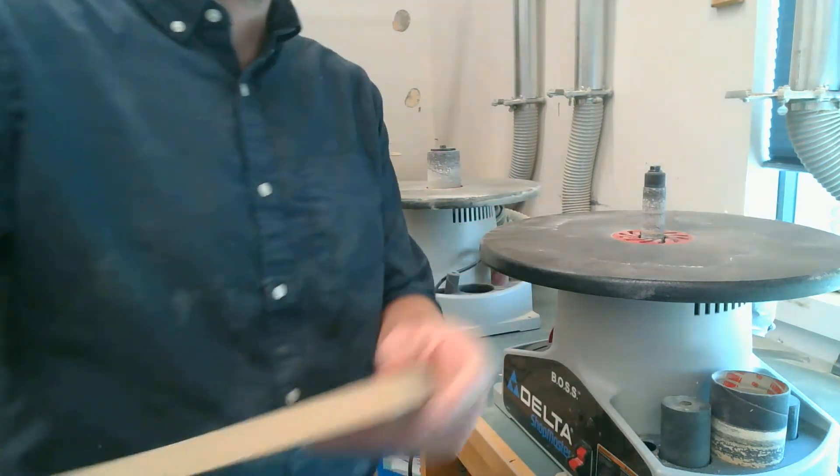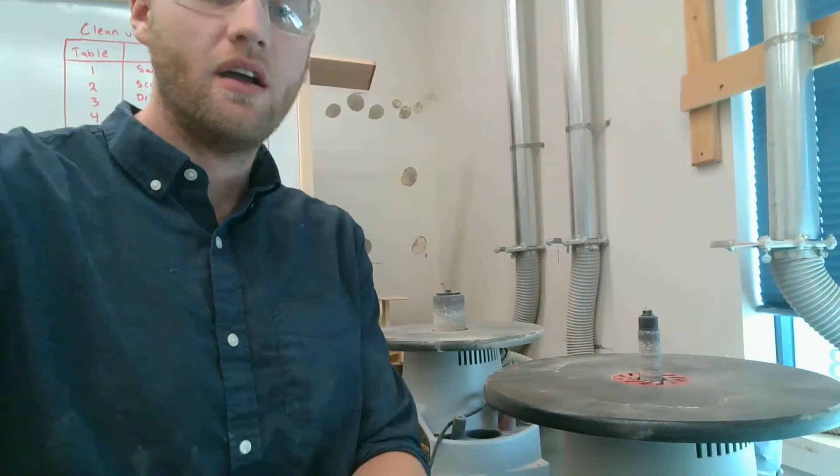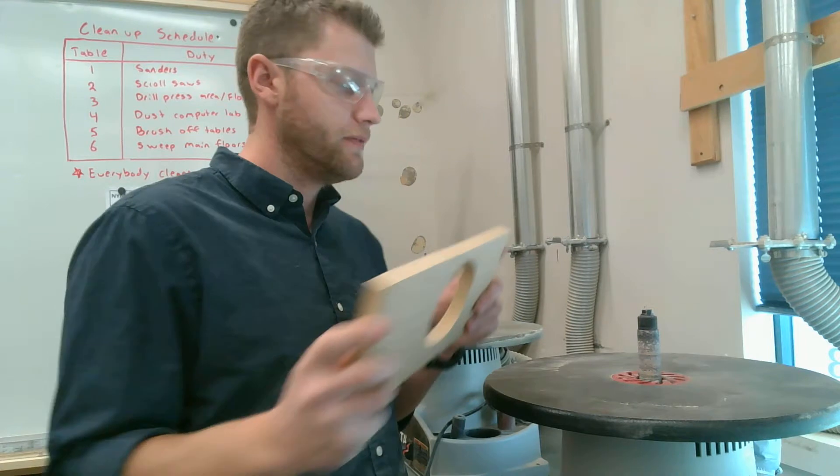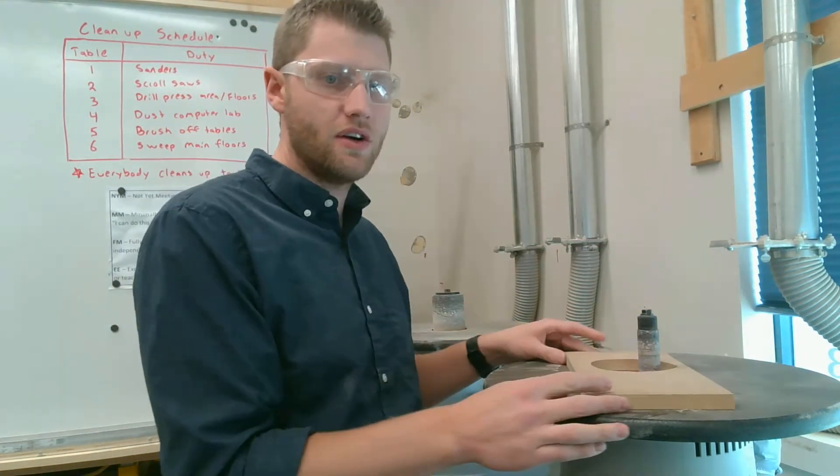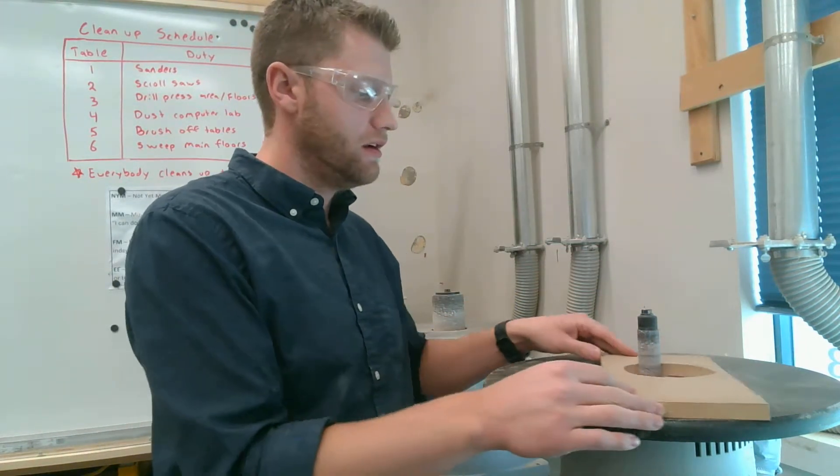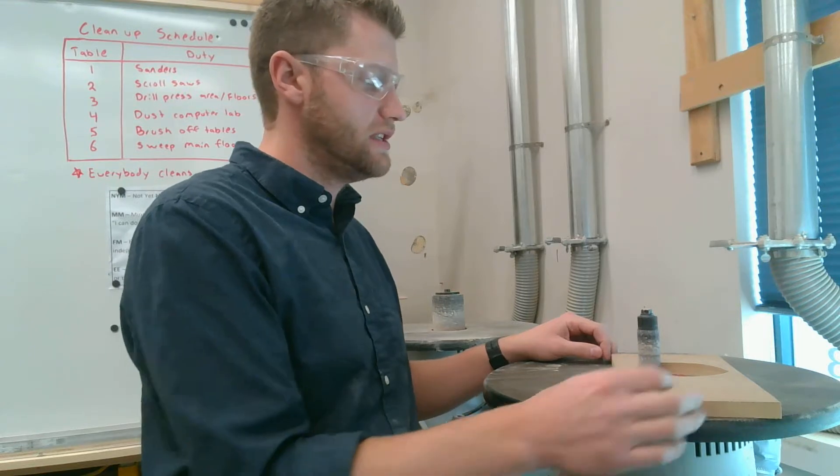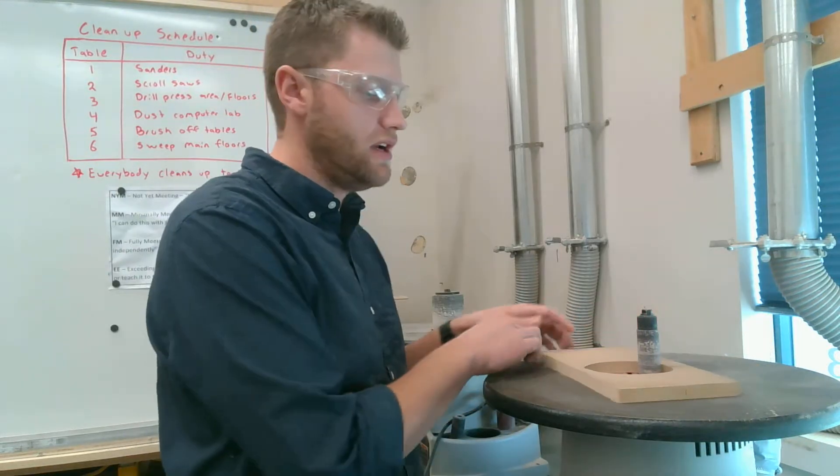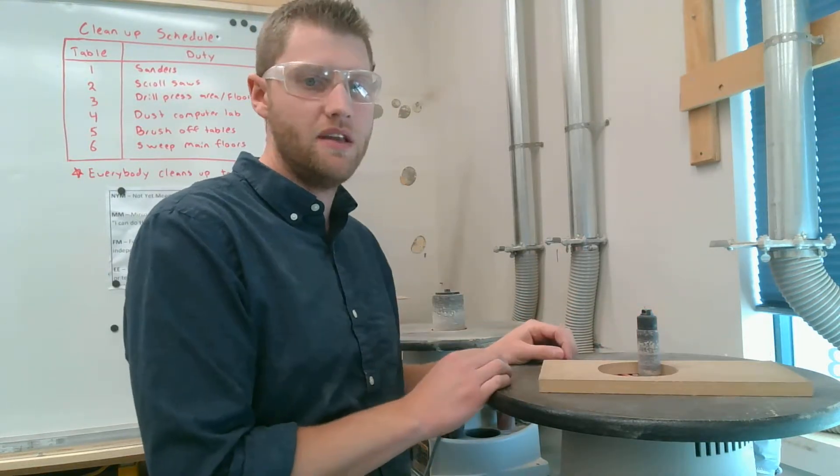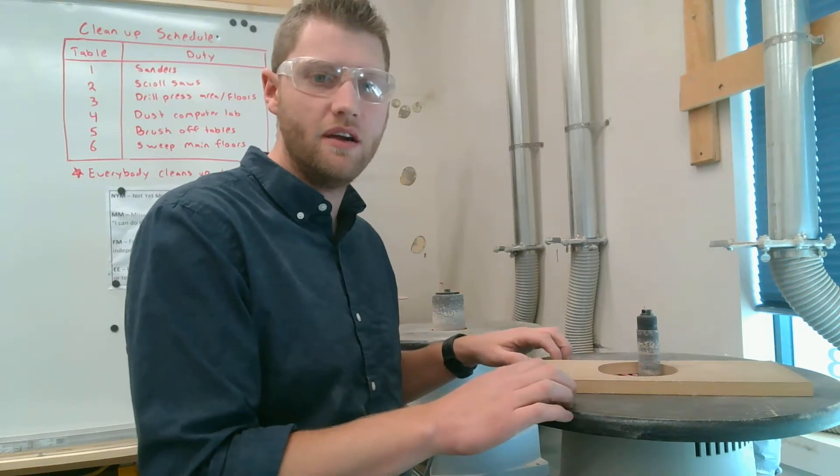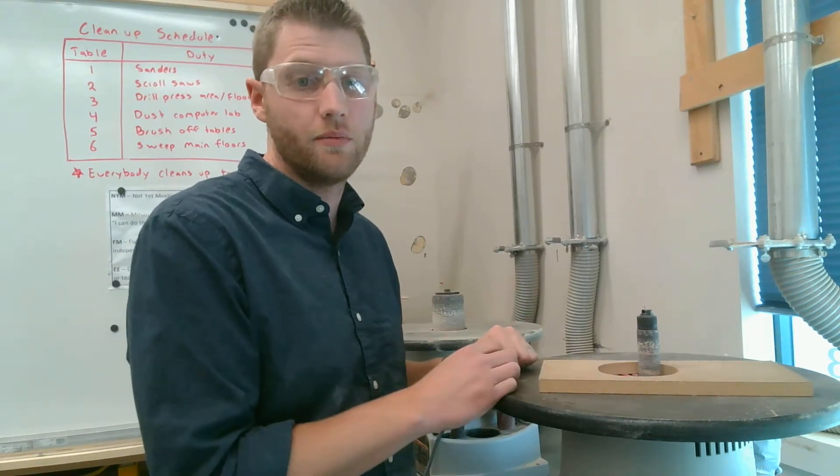So on this machine for example we cannot take our piece of wood like this and stick it over top and start sanding it. Our wood could potentially start to spin and if it starts to spin on here at that high speed, our fingers are going to be sitting there and we could hurt our fingers or break our fingers.